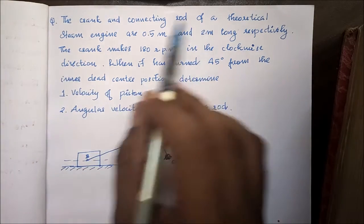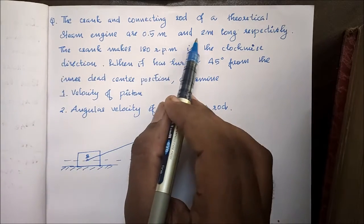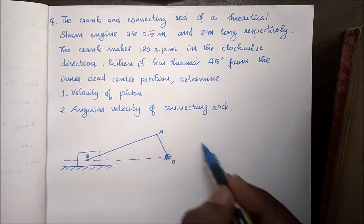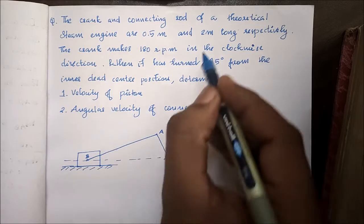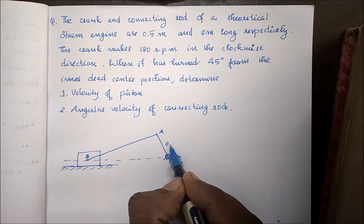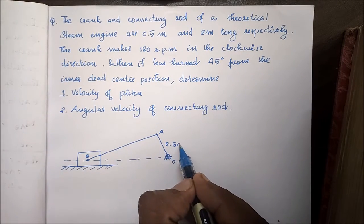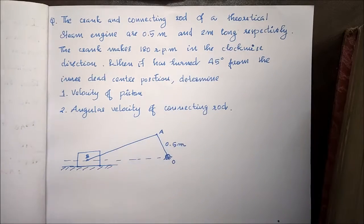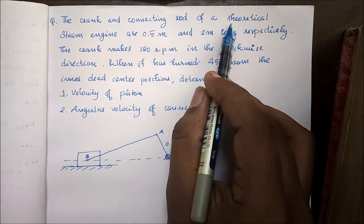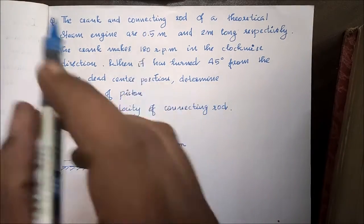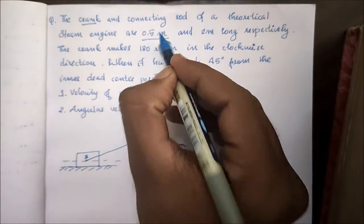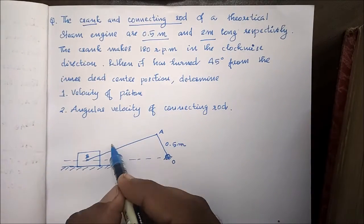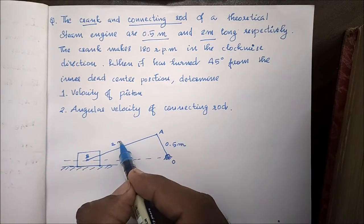The crankshaft is 0.5 meters long. The connecting rod is 2 meters long respectively. The crank is 0.5m and the connecting rod is 2m.